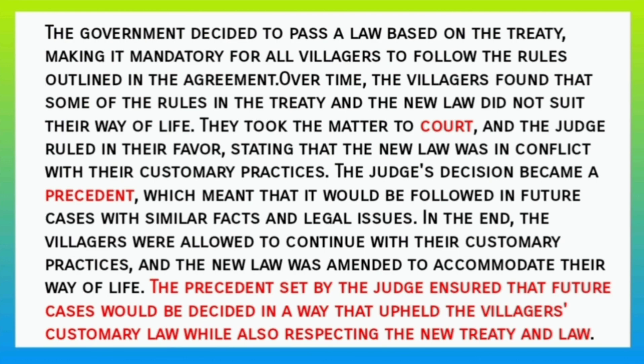Over time, the villagers found that some of the rules in the treaty and the new law did not suit their way of life. They took the matter to court, and the judge ruled in their favor, stating that the new law was in conflict with their customary practices. The judge's decision became a precedent, meaning it would be followed in future cases with similar facts and legal issues. In the end, the villagers were allowed to continue with their customary practices, and the new law was amended to accommodate their way of life. The precedent set by the judge ensured that future cases would be decided in a way that upheld the villagers' customary law while also respecting the new treaty and law.